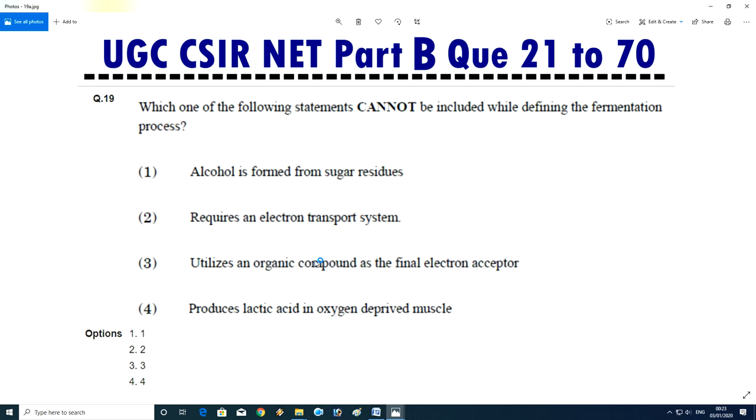Question No.19 - Which one of the following statement cannot be included while defining the fermentation process? Alcohol is formed from sugar residue, requires an electron transport chain, utilize an organic compound as a final electron acceptor, or produces lactic acid in oxygen deprived muscle. Answer is B, requires an electron transport system.